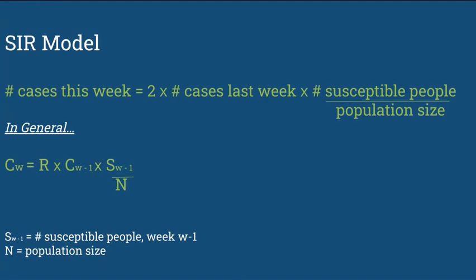The equation is, the number of cases this week is equal to 2 times the number of cases last week, like the previous equation, but then you have to multiply it times the number of susceptible people divided by the population size. And it can also be written as C sub W is equal to R times C sub W minus 1, which you all know already, times S sub W minus 1 over N, which means susceptibles last week divided by the number of people or the population size.